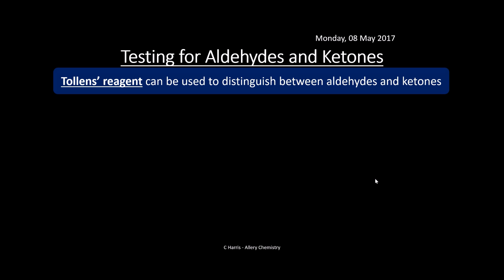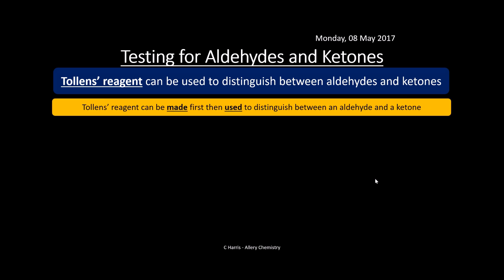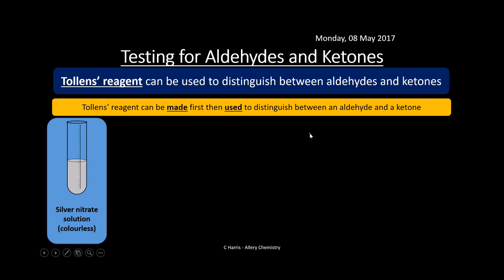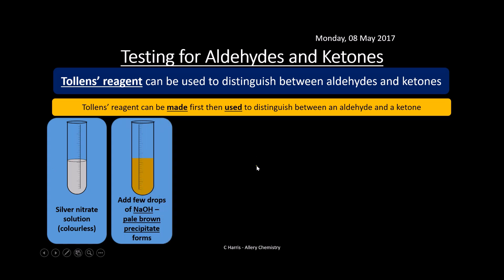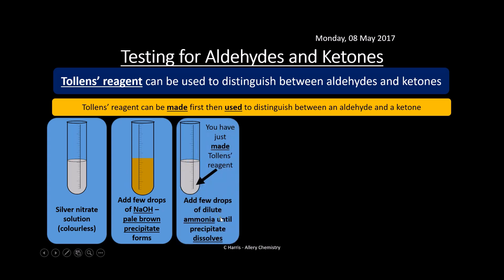We can also use another test, which is Tollens' reagent. This also distinguishes between aldehydes and ketones. Tollens' reagent is made first: you start with silver nitrate solution, which is colorless. You then add a few drops of sodium hydroxide and get a pale brown precipitate. Then add a few drops of dilute ammonia until the precipitate dissolves — and what you've made is your Tollens' reagent. Make sure you know how to make it in the first place.